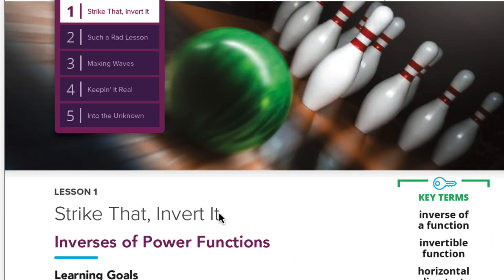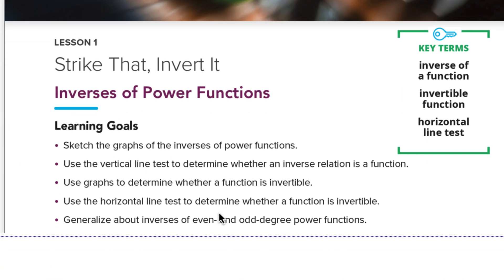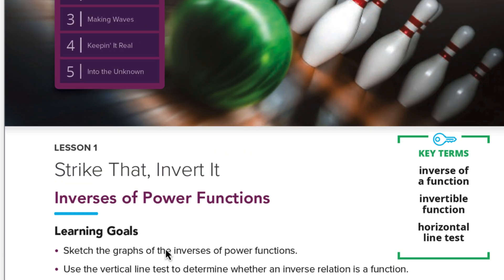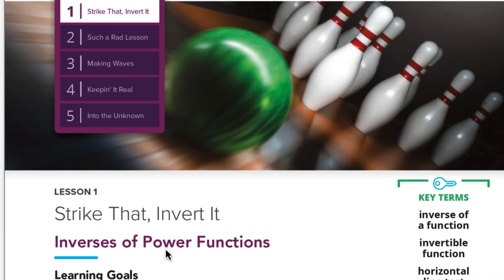Let's go back to the very beginning and see if we met all our learning goals today. Did we learn how to sketch graphs of inverses? Yes, using the vertical line test to see if it's a function. We determined whether a function is invertible. We used the horizontal line test to determine whether a function is invertible. And we generalized about even and odd degree power functions. That's it — that is lesson one. Good luck on your mastery check. This one's easy.